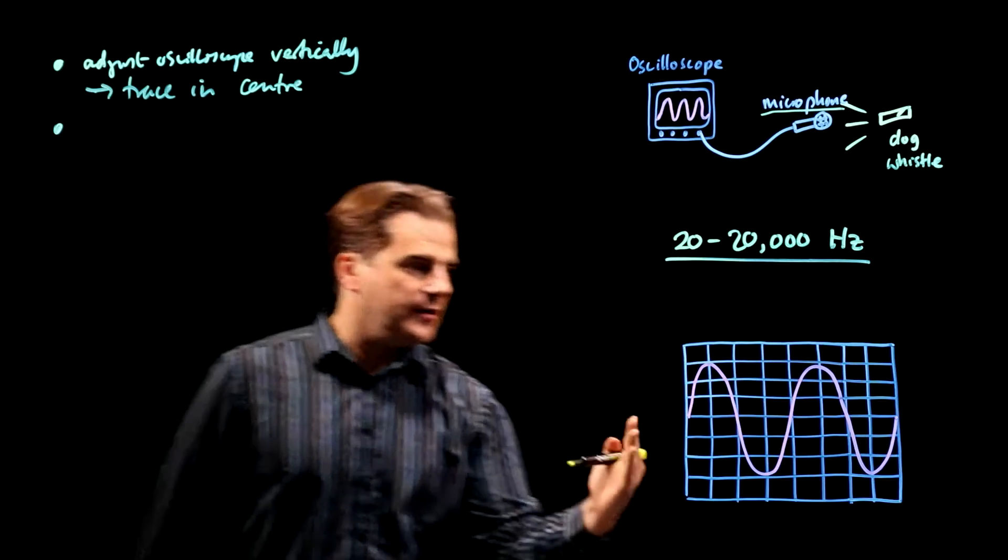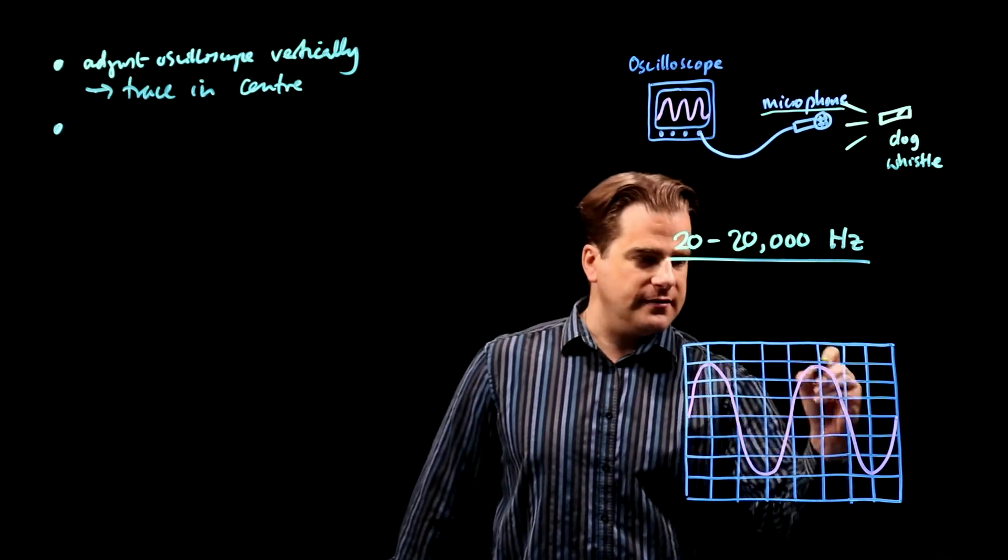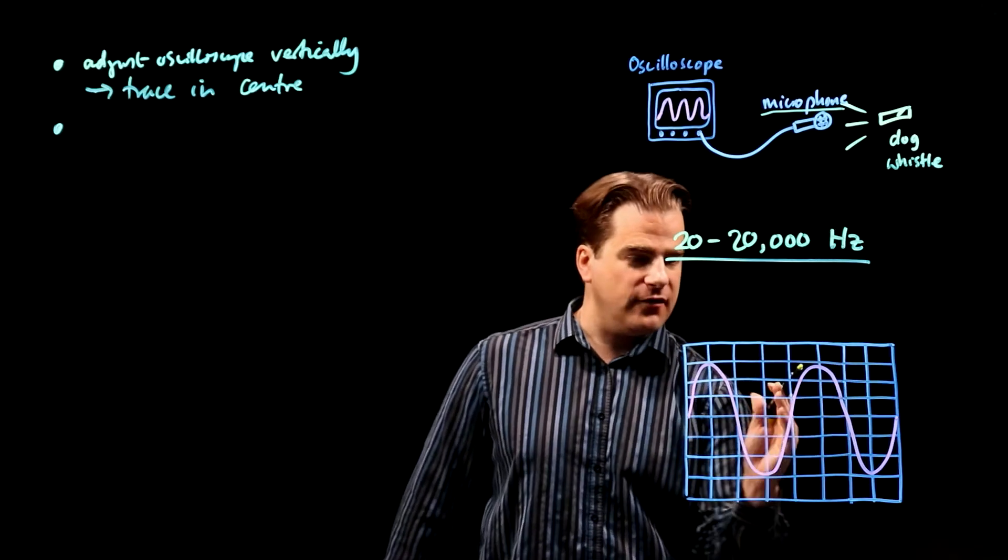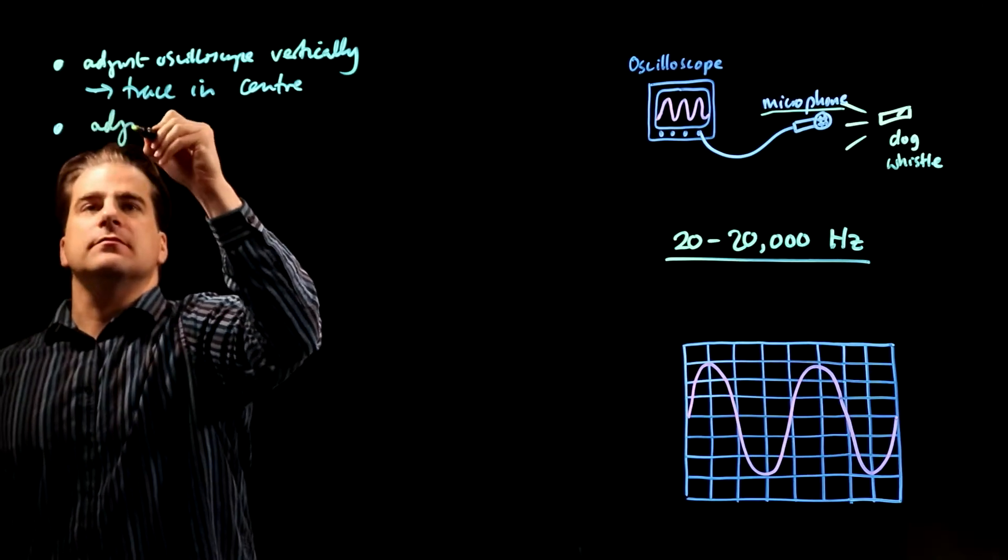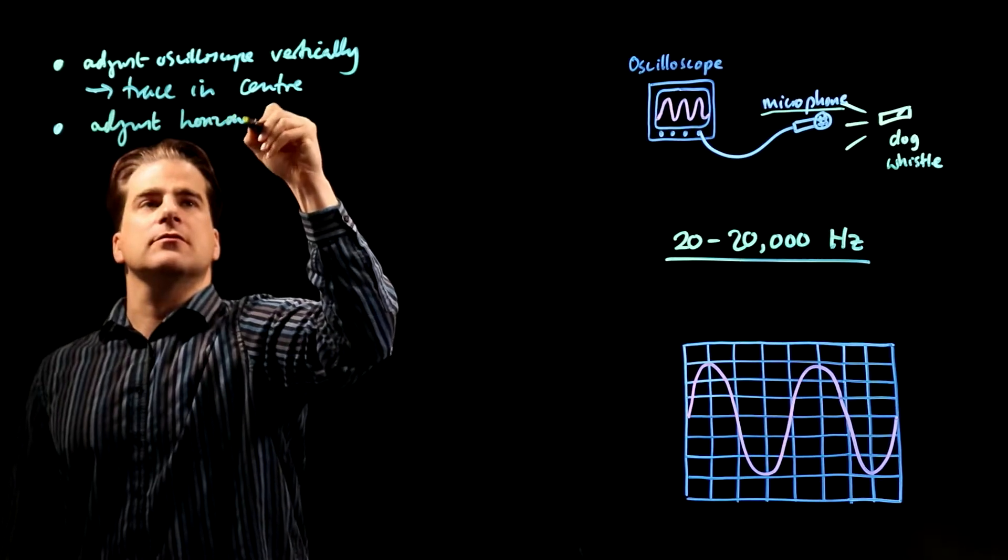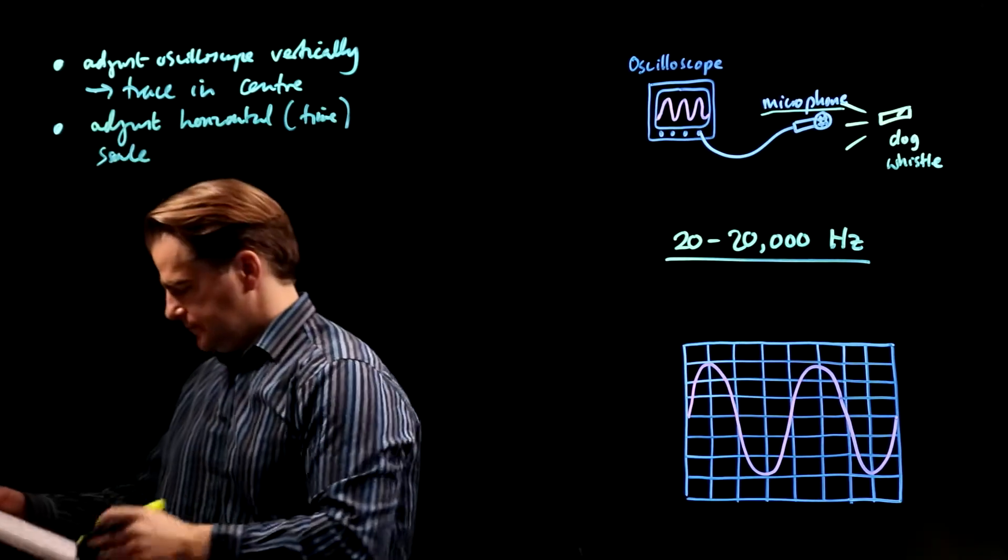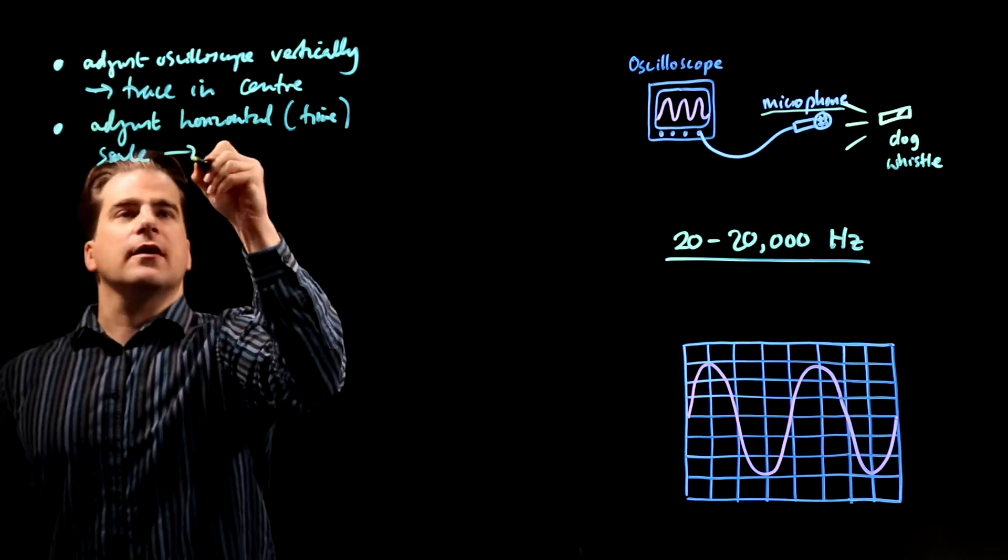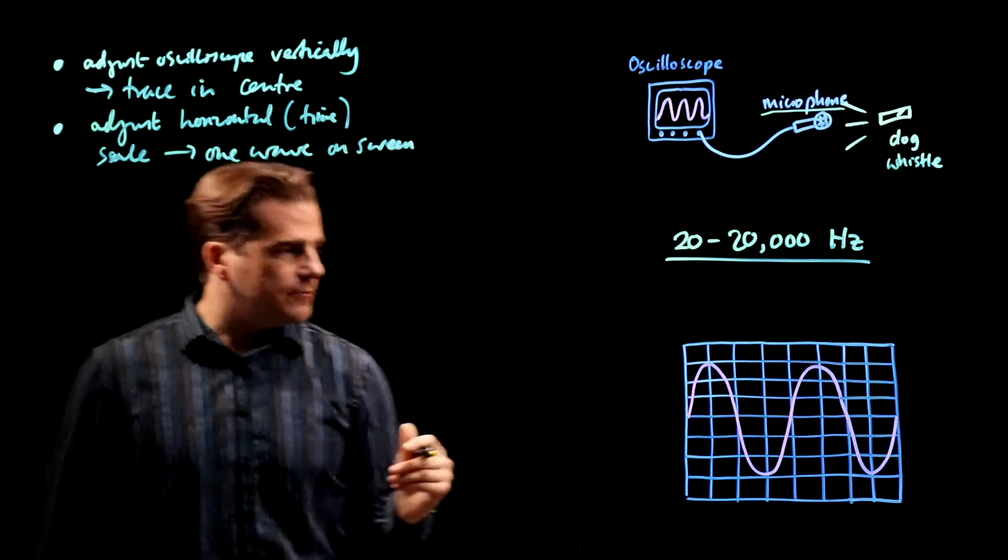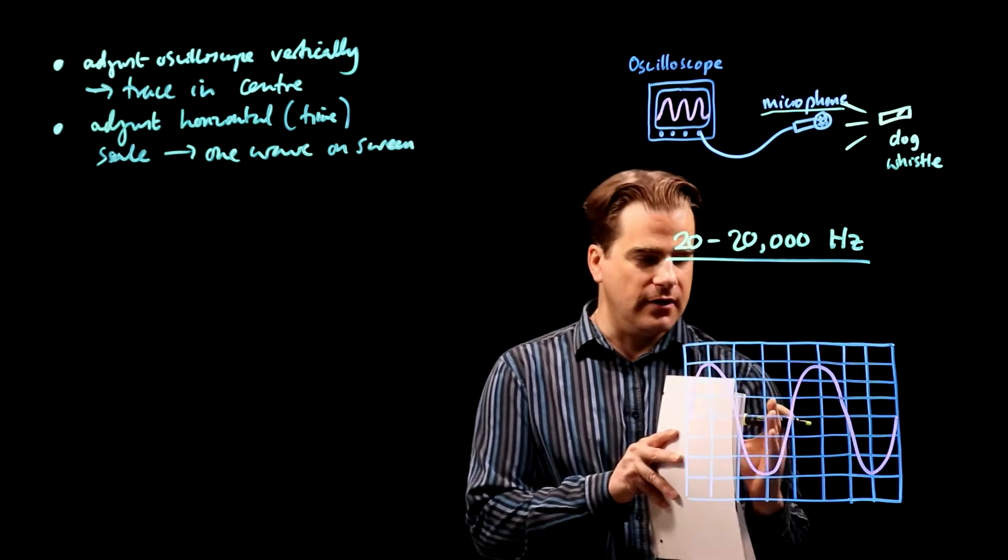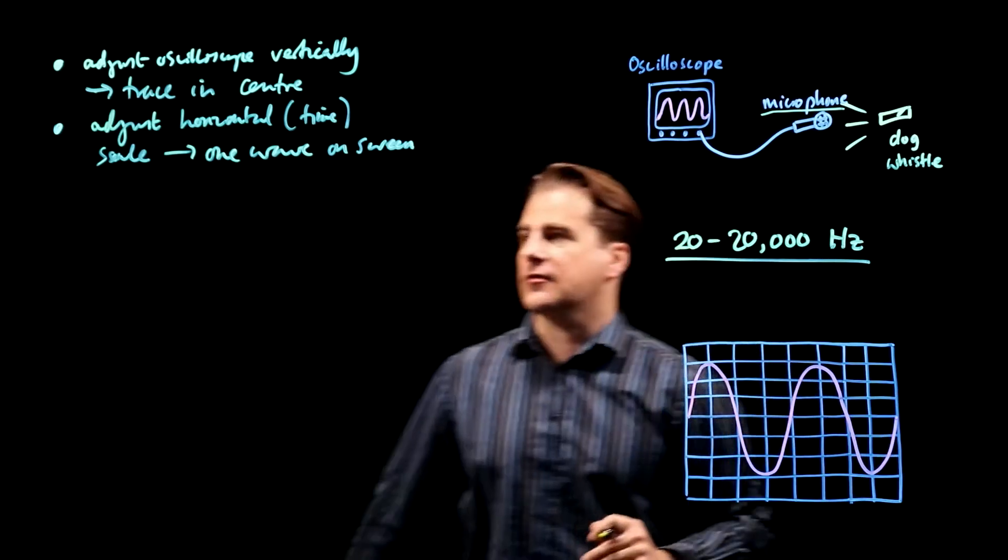Adjust the time scale. That's the horizontal scale. So you get at least one period or one wave in the screen like I've drawn it there. Adjust horizontal or the time scale so you get one wave on the screen. You don't want too many waves and at the same time you've got to have at least one wave. You can't have one wave overlapping the edges of the screen.